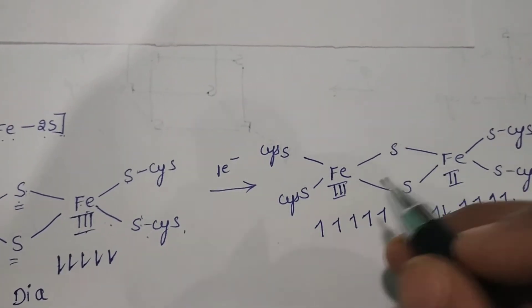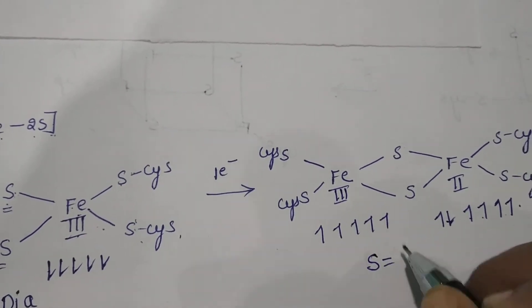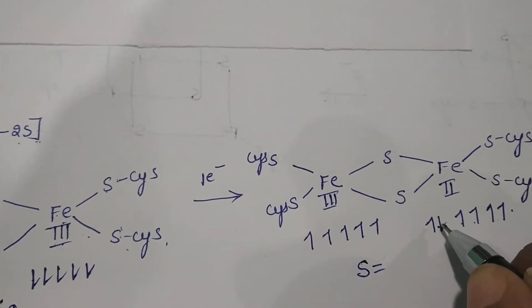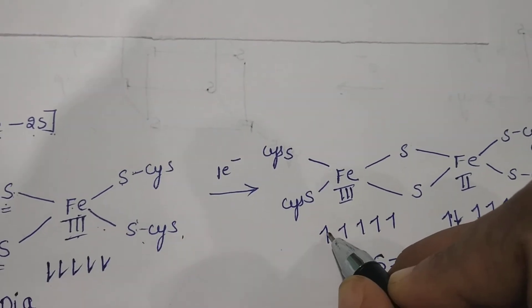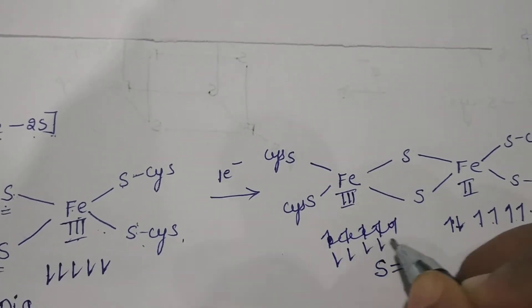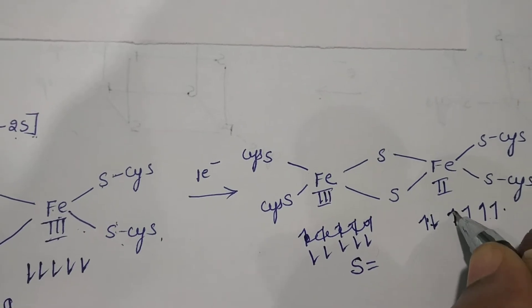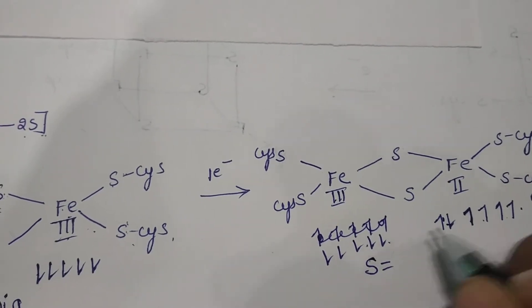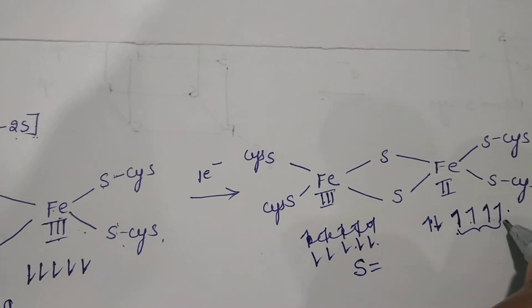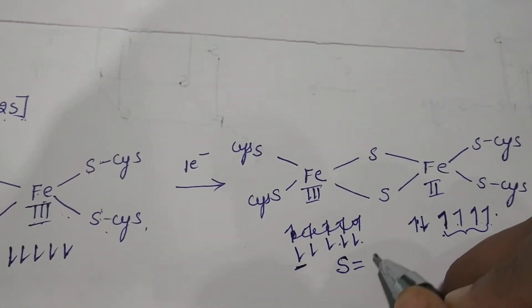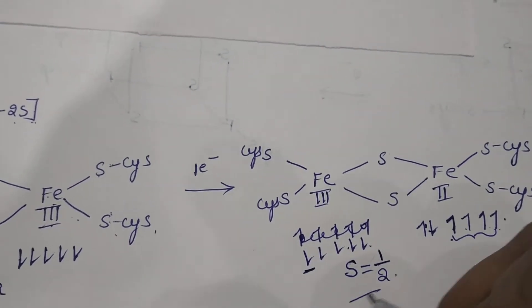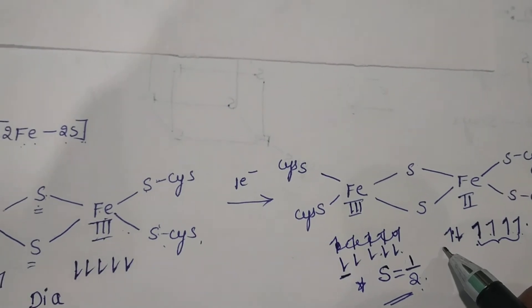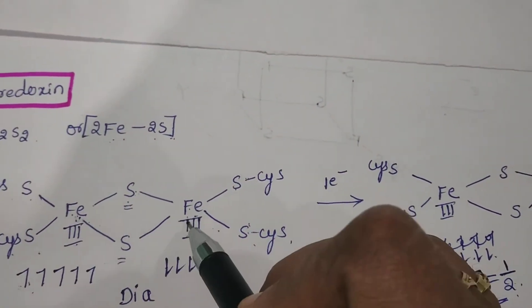So what is S here? Counting the electrons: plus half, minus half, plus half, minus half, plus — these four electrons cancel, and the remaining one electron gives S equal to one-half. This is very important: S is equal to one-half in ferredoxin. This is the reduced form of ferredoxin.